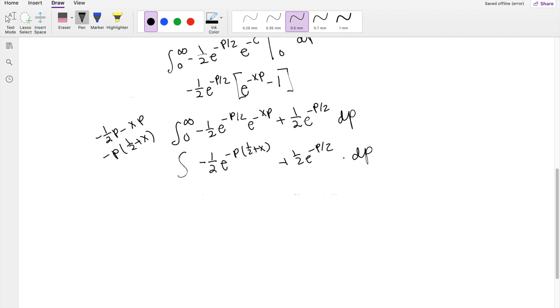So then this is equal to, remember if it's like e to the negative 6x and you take the anti-derivative, this becomes negative 1 sixth e to the negative 6x. It's the same idea here. The negatives cancel out, so you get 1 half e to the negative P times 1 half plus x, and you divide by that 6, so you do the same thing, you divide by that 1 half plus x in here, plus this anti-derivative is going to give you a negative e to the negative P over 2, integrating from 0 to infinity.